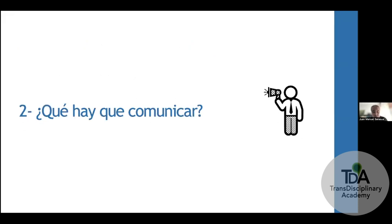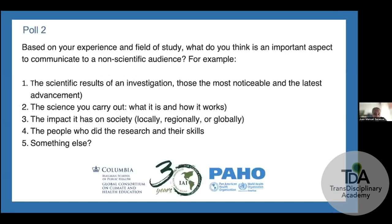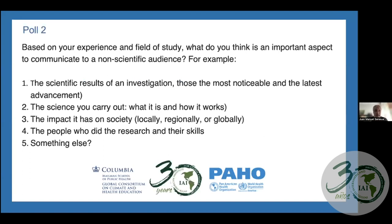We need to understand what we need to communicate. Based on your experience and your field of study, what do you think is an important aspect to communicate to a non-scientific audience? You can choose: communicating scientific results of an investigation; explaining what your scientific area is about and what distinguishes it; communicating the impact on society locally, regionally, or globally; or the people who did the research and their skills — their training, where they come from, what they contributed. Please write additional ideas in the chat.